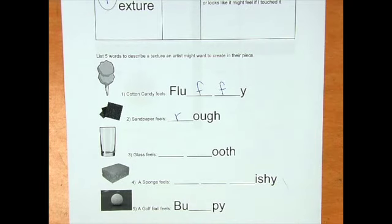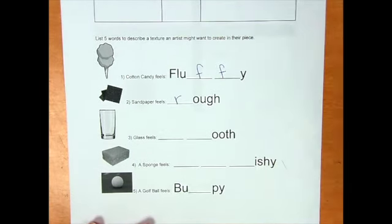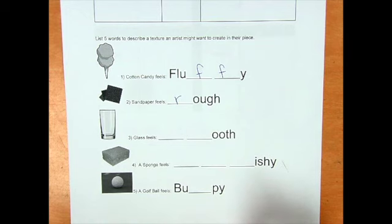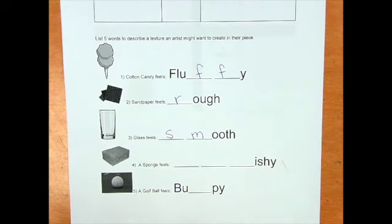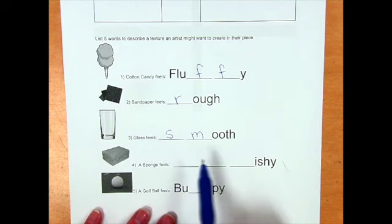The next object I have is a glass made out of glass. And glass feels smooth. So what two letters make sm? It's going to be S and M to make smooth. Glass feels smooth.